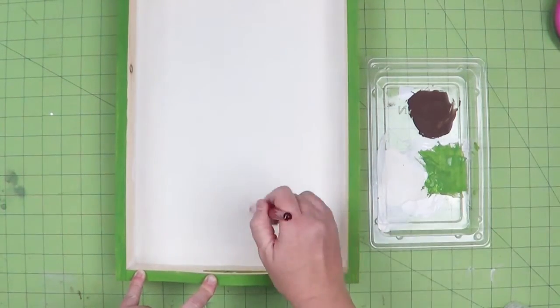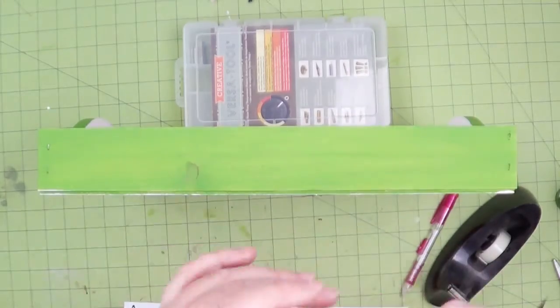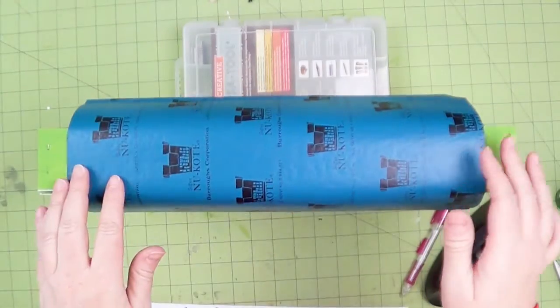You will also need, out of the Creative VersaTool kit, the flow point to burn the font into the side of the serving tray.